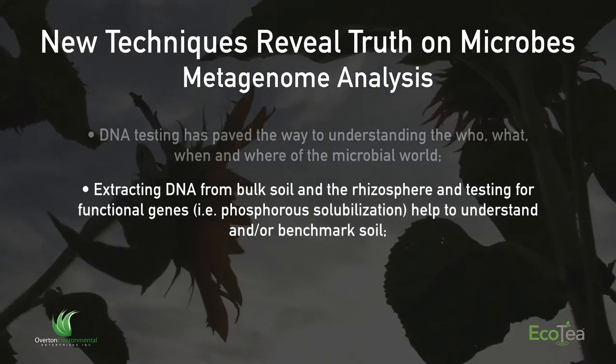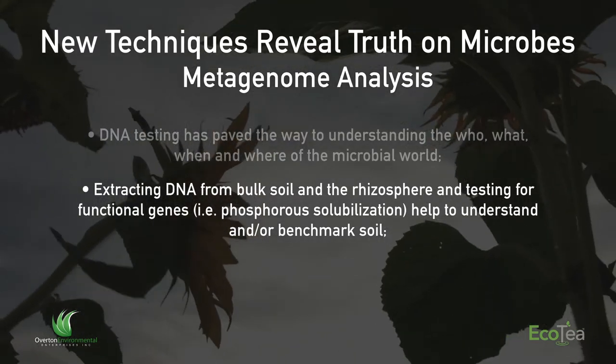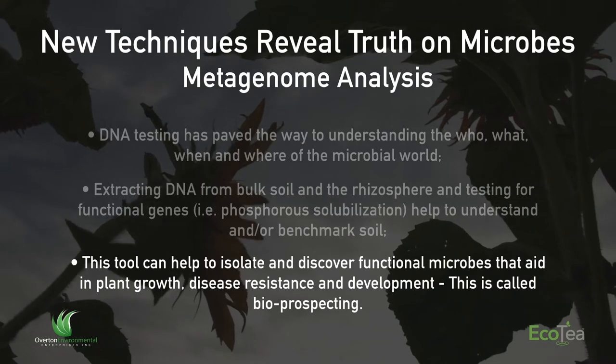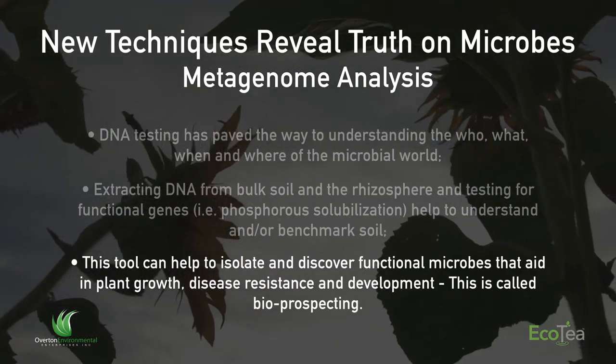You can code for phosphorus solubilization or phosphatase — an enzyme that pulls phosphorus out of solution — to benchmark soil and understand its ability to remove phosphorus from locked-up organic matter because the phosphatase gene is present. This helps to isolate and discover functional microbes that aid in plant growth, disease resistance, and development. It's basically bioprospecting — what the medical field does to look for new antibiotics and what large agricultural companies do to isolate microbes they can patent and sell. I'm more of an ecological fan myself — I believe it's more about a system than one microbe.